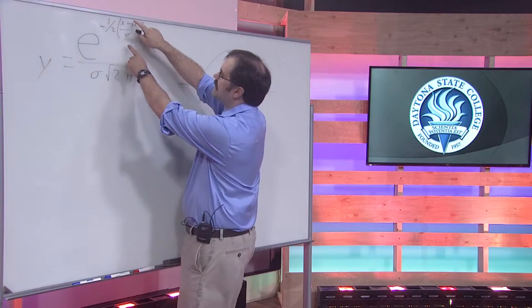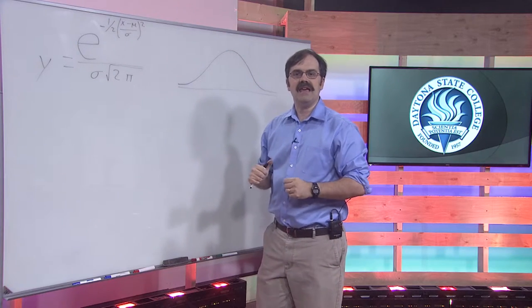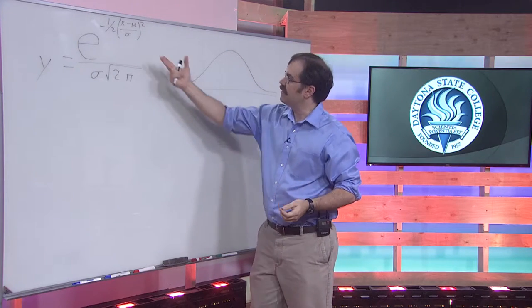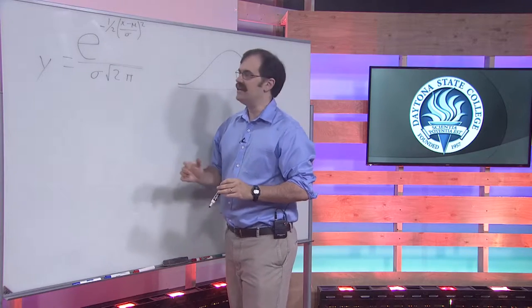If you look at this entire thing in parentheses, that thing is the thing that we use to calculate the z-score of a distribution.